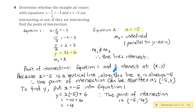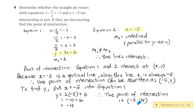The point of intersection is where both equations meet. Because x equals minus 5, x must equal minus 5 along the vertical line, so the intersection point has x-coordinate minus 5. Substituting x equals minus 5 into equation 1 gives y equals 2 times minus 5 plus 6, which resolves to y equals minus 4. Therefore the point of intersection is (minus 5, minus 4).